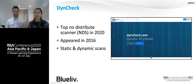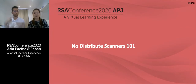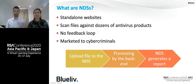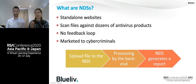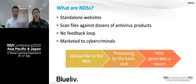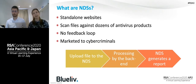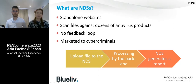No-distribute scanners, or NDSes — also sometimes known as counter-AV — are standalone websites (not part of a forum or downloadable software) with API access. They scan potentially malicious files against dozens of different antivirus products and generate a report telling you whether and how that file might be detected. The key differentiator from something legitimate like VirusTotal is that there is no feedback loop — cybercriminals have disabled the feedback loop between the antivirus product and the antivirus company.